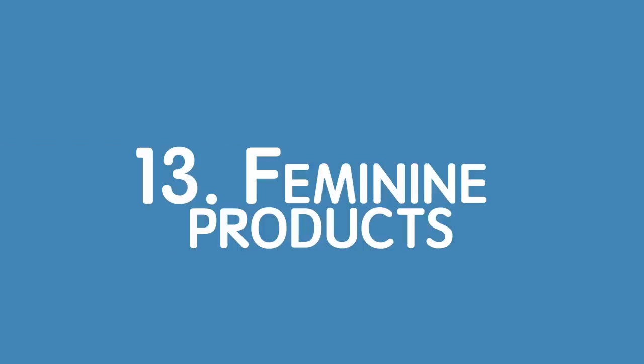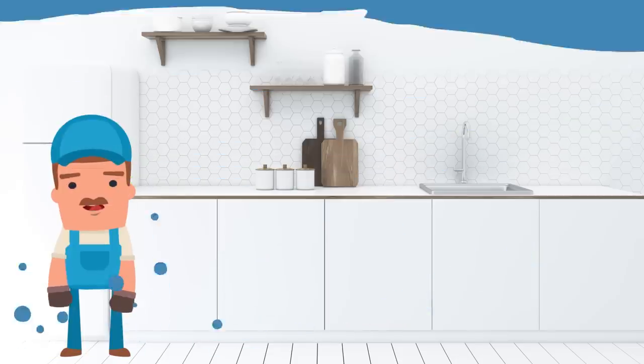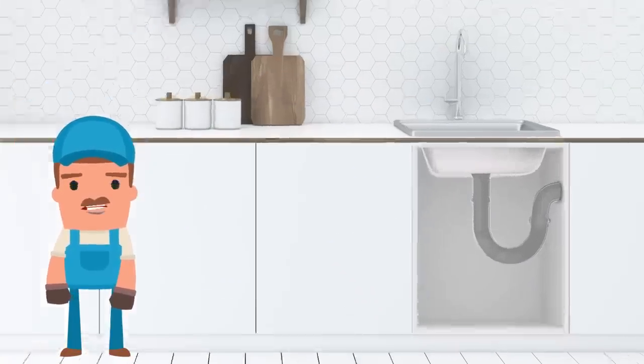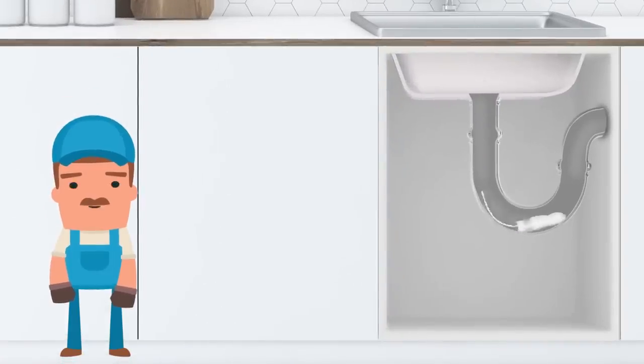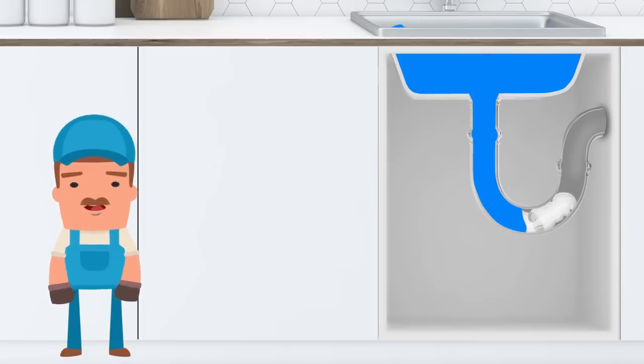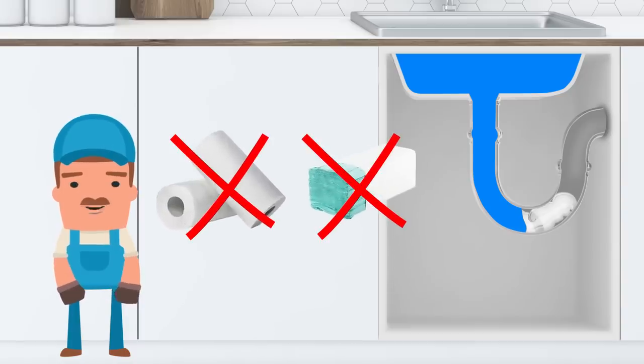Number 13. Feminine Products. Everyone knows that feminine products, like pads and tampons, are designed to absorb liquids. Well, while super absorbency is exactly what women are looking for in these products, it's a nightmare for your toilets, pipes, and drain. Since they can dramatically increase in size, it leads to a very serious clog. Seeing a pattern here? Absorbing and expanding equals bad for drains. The same goes for flushable wipes, paper towels, napkins, and cotton balls.